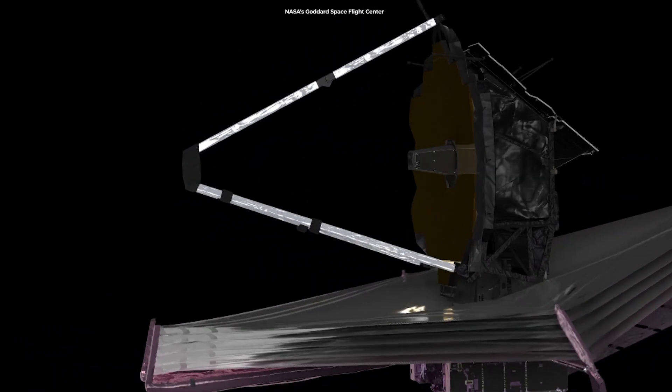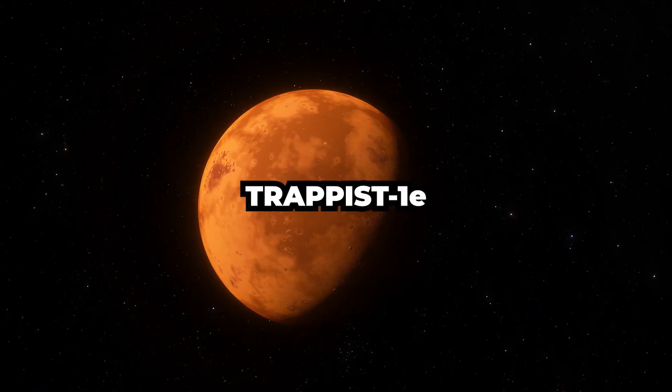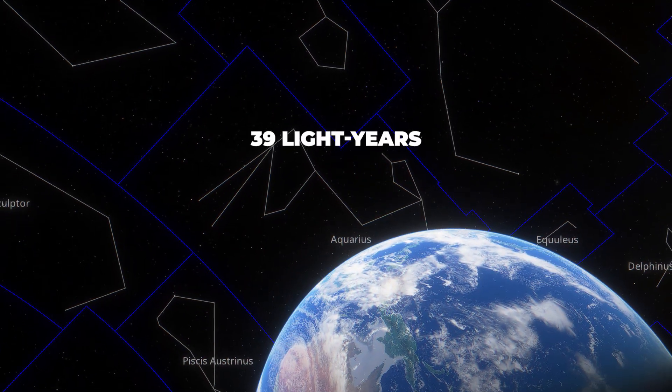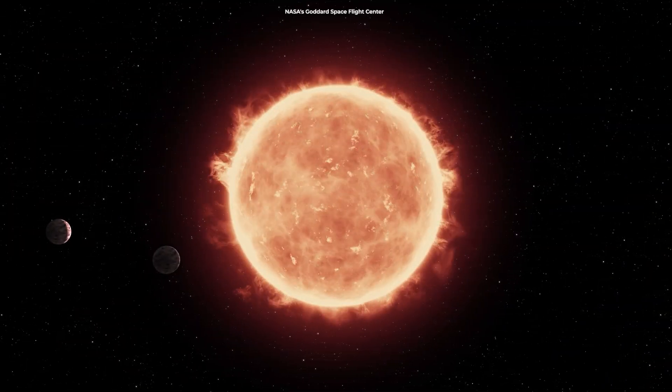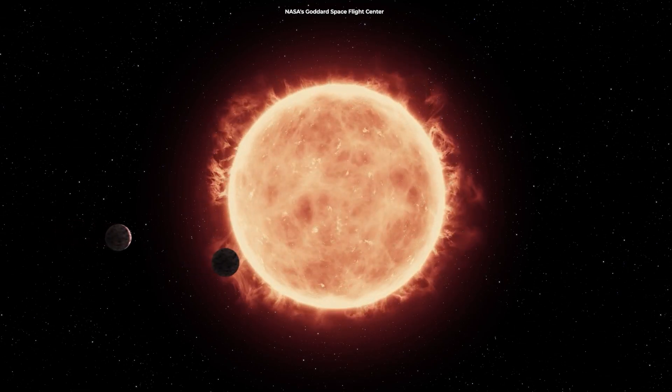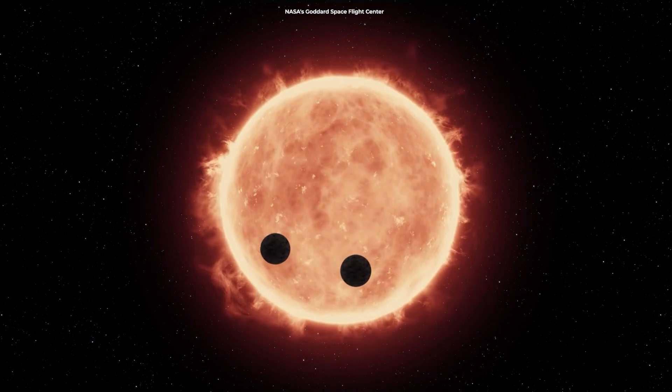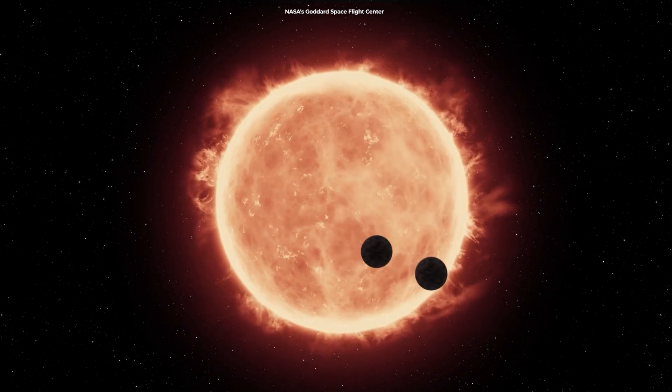In the coming months, Webb is set to turn its mirrors toward TRAPPIST-1e, a potentially habitable Earth-sized planet a mere 39 light-years from Earth. Webb can look for biosignatures by studying planets as they pass in front of their host stars and capturing starlight that filters through the planet's atmosphere.